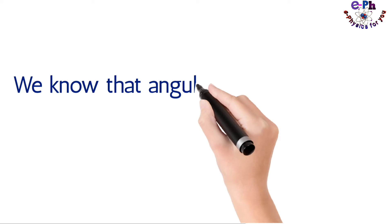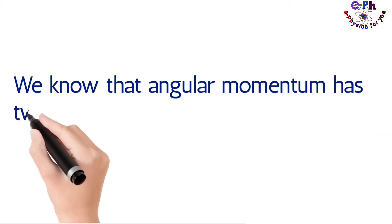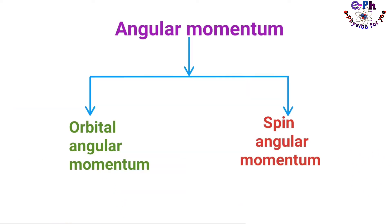We know that angular momentum has two types: one of them is orbital angular momentum and the other is spin angular momentum.